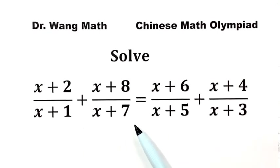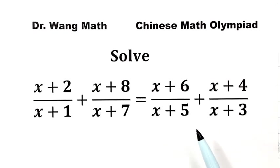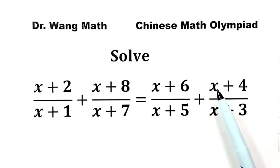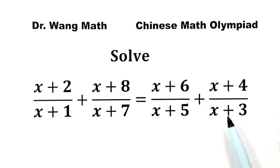Since both sides of the equation involve a sum of two fractions, typically we simplify fractions by finding a common denominator. However, in this case, all fractions have an x in both the numerator and the denominator. So our first step is to simplify each fraction individually, which will make our overall solving process easier.